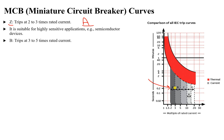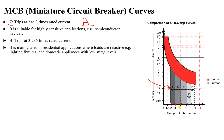Type B starts tripping instantaneously from 3 to 5 times the rated current — this is the IEC-defined range for B. It can be 3, 4, or 5 times depending on the circuit breaker design and manufacturer. This type is used in residential applications where loads are resistive, such as lighting fixtures and domestic appliances with low surge levels.